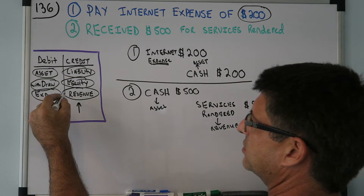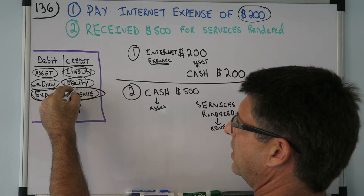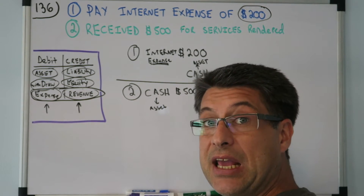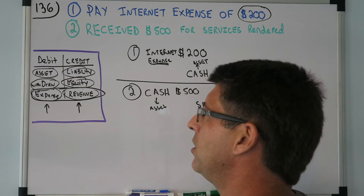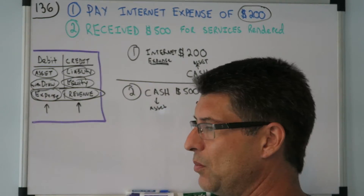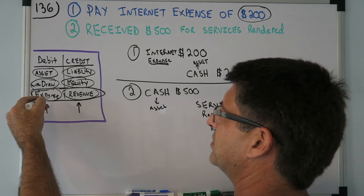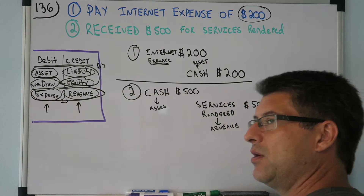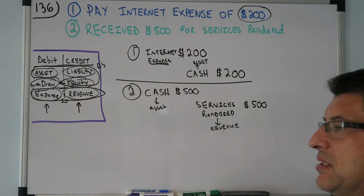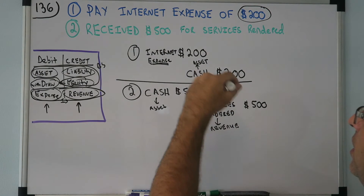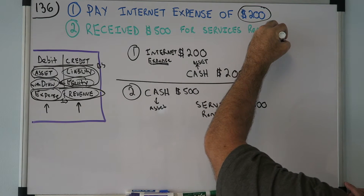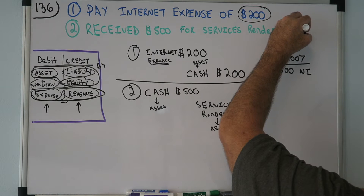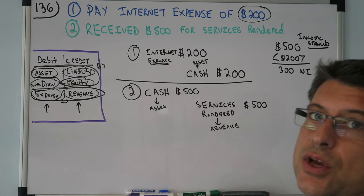Let's do a quick income statement and balance sheet. The income statement is Revenue minus Expenses. This is why I like DC ADE/LER — it keeps the income statement together on the right side. Revenue $500 minus expenses $200 equals $300 net income. That's the income statement.